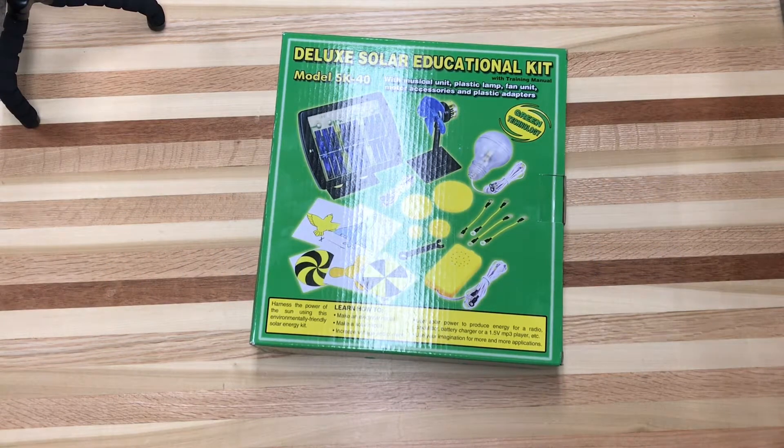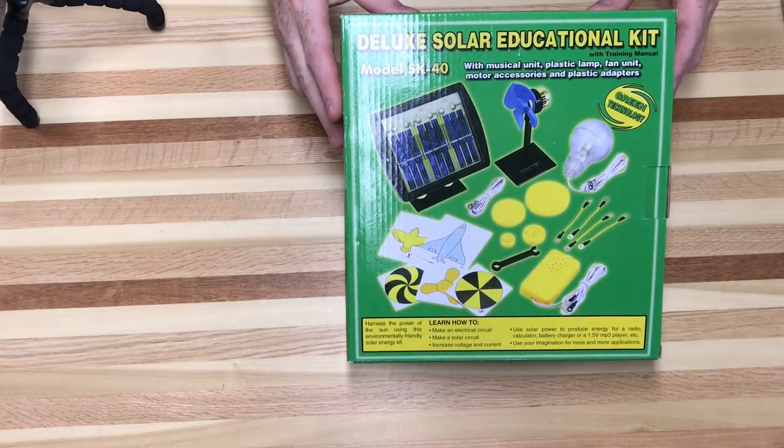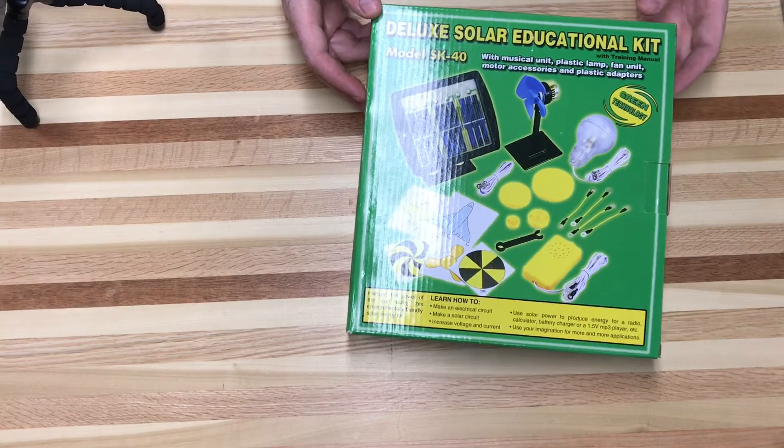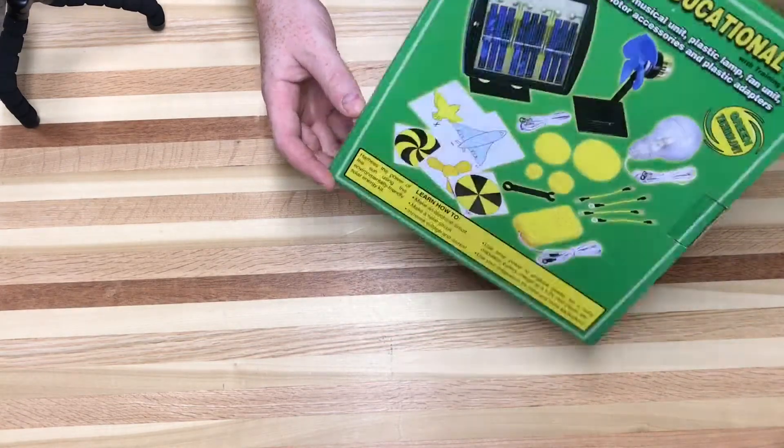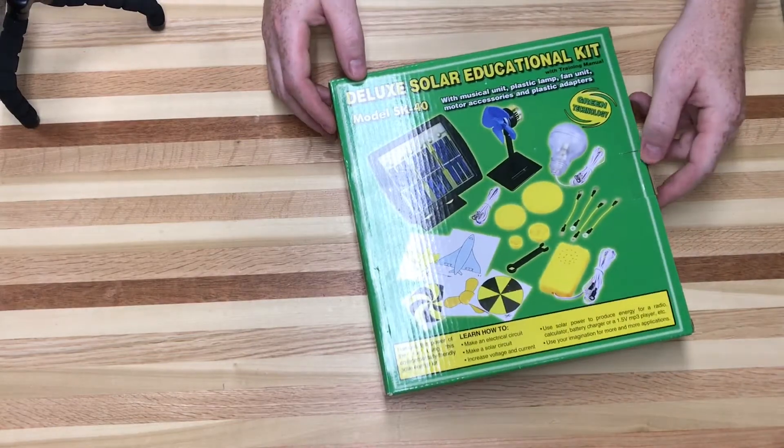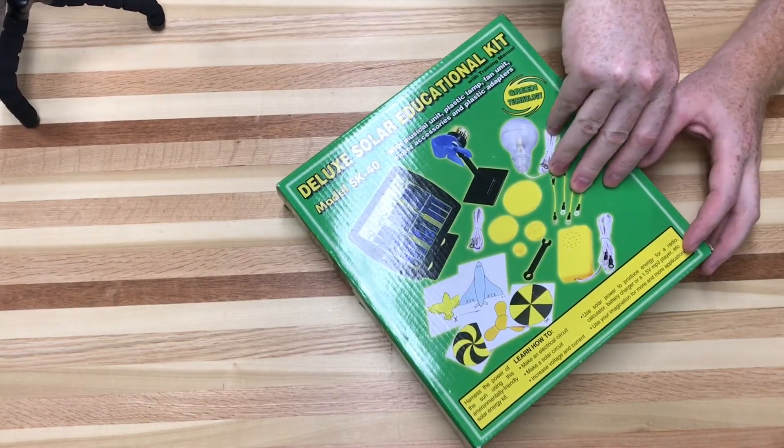Welcome back to Reynolds Workshop. Doing a review of the deluxe solar educational kit that you can get on Amazon. There's a link below. It's from Elenco, which is an electronics parts company that you may be familiar with.